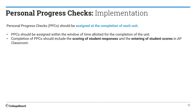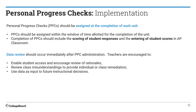Progress checks should be assigned at the completion of each unit. You'll also want to score student responses and enter scores for any FRQs you assign, because those will have to be graded by hand — but we've given you scoring guidelines for that. Then you want to review the data: have students look at rationales, review class misunderstandings, and figure out how that data influences your future instructional decisions.